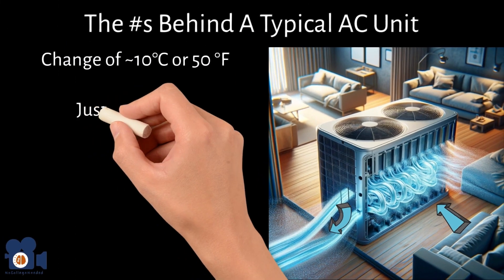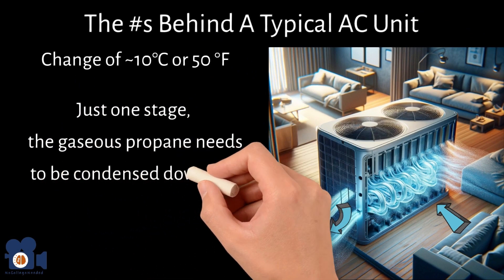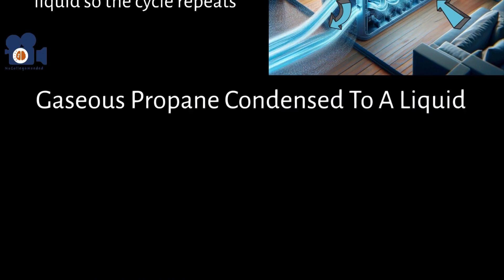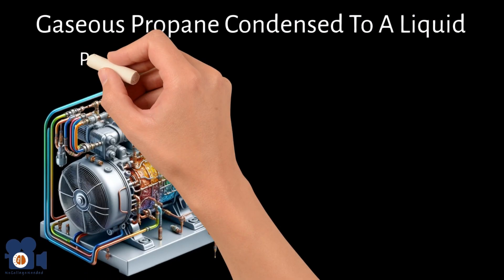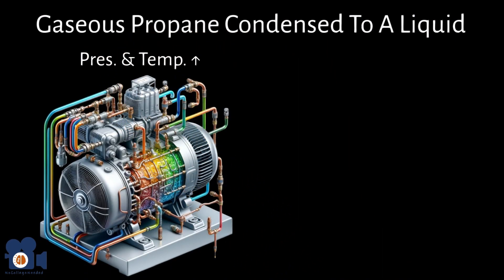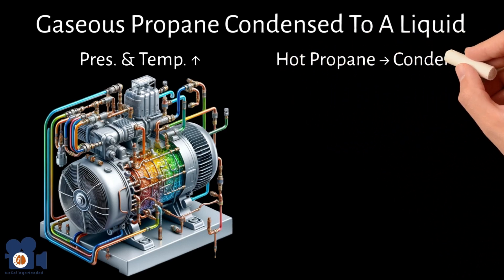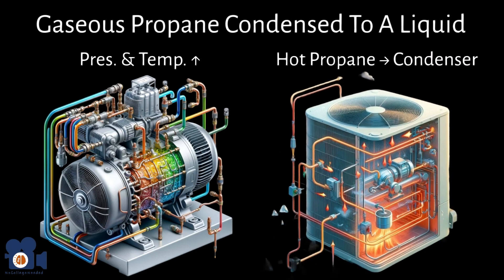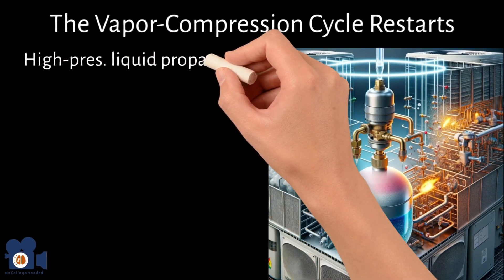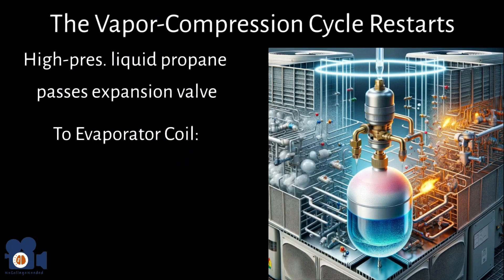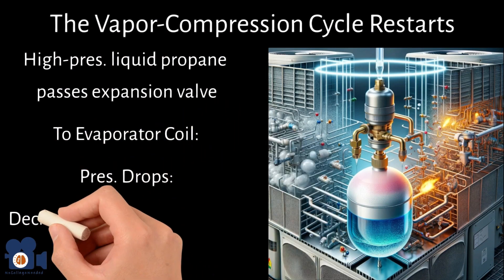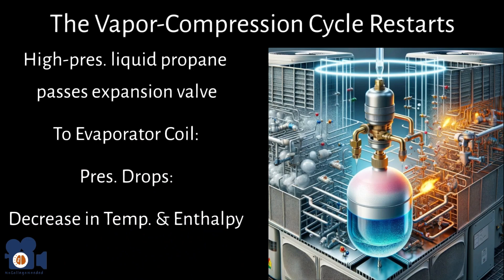Keep in mind that this is just one stage. The gaseous propane needs to be condensed down to a liquid so the cycle repeats. To do this, the vaporized propane is compressed by a compressor, which increases its pressure as well as its temperature, which the AC unit needs to get rid of. To do this, it sends the hot propane to a condenser where the propane transfers its heat to air that is then pumped outside. That is why on any AC unit, there is also a discharge of hot air or the AC unit itself feels warm. From there, the high pressure liquid propane passes through an expansion valve back to the evaporator coil, where its pressure drops suddenly leading to a decrease in temperature and enthalpy to start the cooling process again.